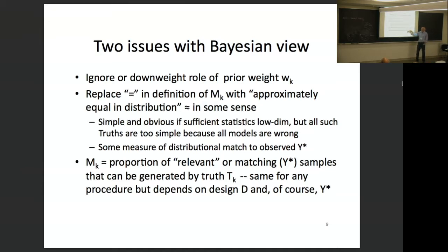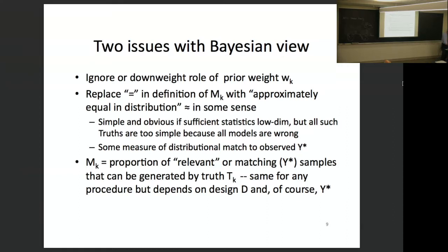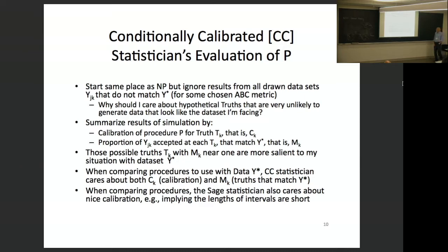So in addition to this calibration for each truth, there's a matching proportion M_k — the proportion of generated data sets that match the observed data under that truth. The conditionally calibrated statistician starts at the same place as Neyman-Pearson, but ignores results from all drawn data sets that do not match the observed data. Basically: why should we care about hypothetical truths that are very unlikely to generate data that look like the observed data?